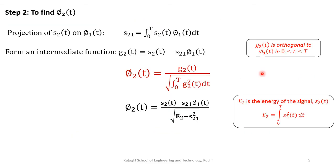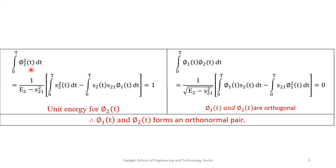In Step 2 we find φ2(t). First we find the projection of s2(t) on the first basis function φ1(t): s21 = ∫₀ᵀ s2(t) · φ1(t) dt. To determine the second basis function, we form an intermediate function g2(t) = s2(t) − s21 · φ1(t). Then φ2(t) = g2(t) / √E[g2]. The energy of φ2(t) equals 1 (normalized to unit energy), and ∫₀ᵀ φ1(t) · φ2(t) dt = 0, meaning φ1(t) and φ2(t) are orthogonal — thus forming an orthonormal pair.